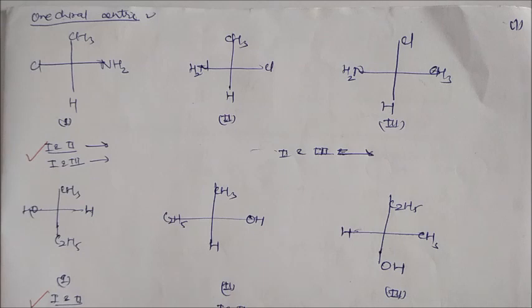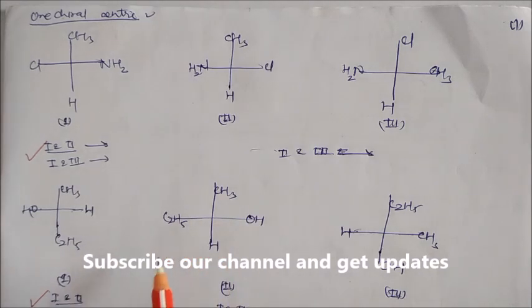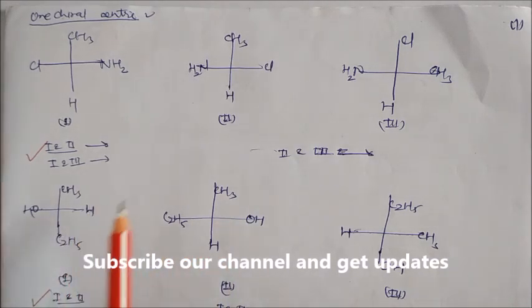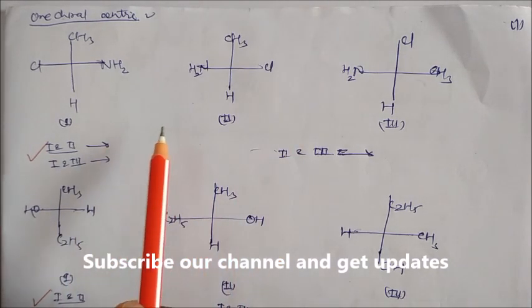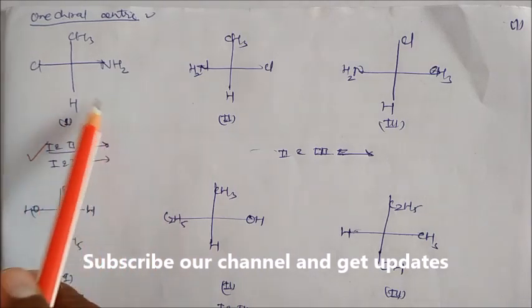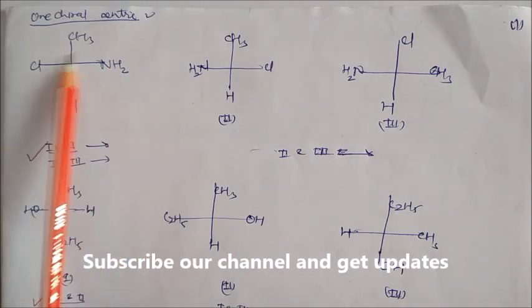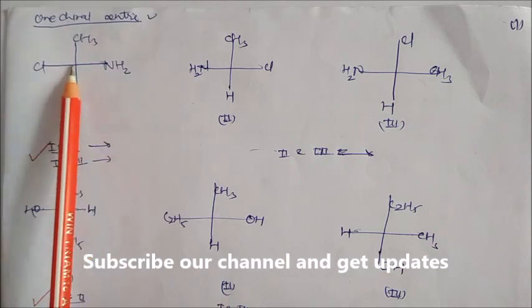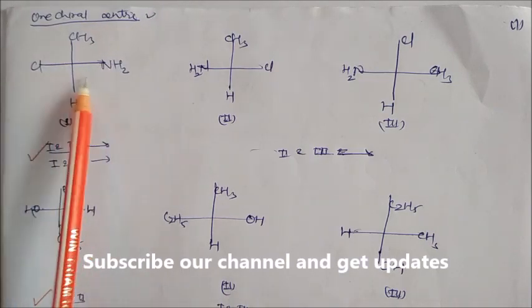In the previous session, we have seen how to identify identical compounds, enantiomers, and diastereomers. So in this session, we will understand through these examples. If the optically active compound contains one chiral center — like this one here with four different groups — it is a chiral compound.